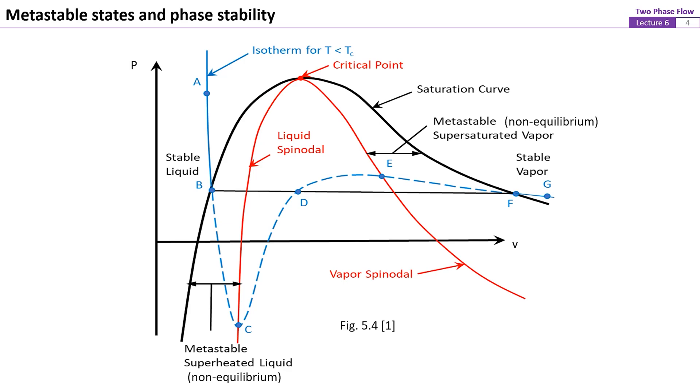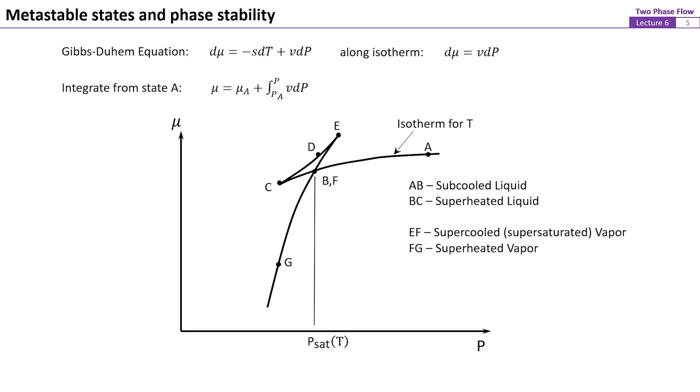These two points are therefore the limits of intrinsic stability. The ray line is called the spinodal curve. Note that the spinodal curve is different from the saturation curve. The region inside the spinodal curve is inaccessible, since these states violate the criterion of mechanical stability. By using the Gibbs-Duhem equation and integrated along an isotherm starting from point A, the curve of chemical potential versus pressure can be plotted.